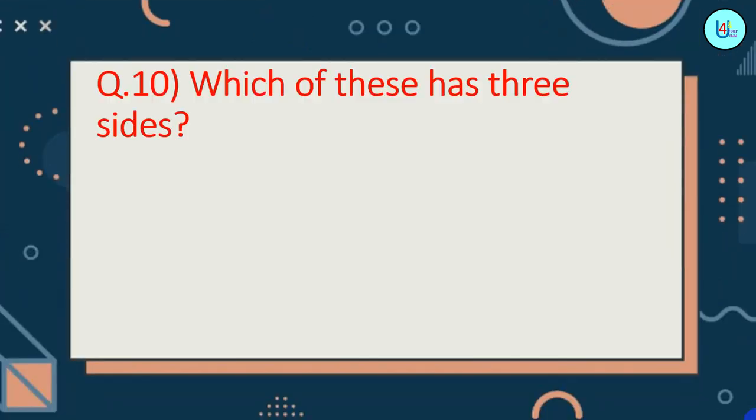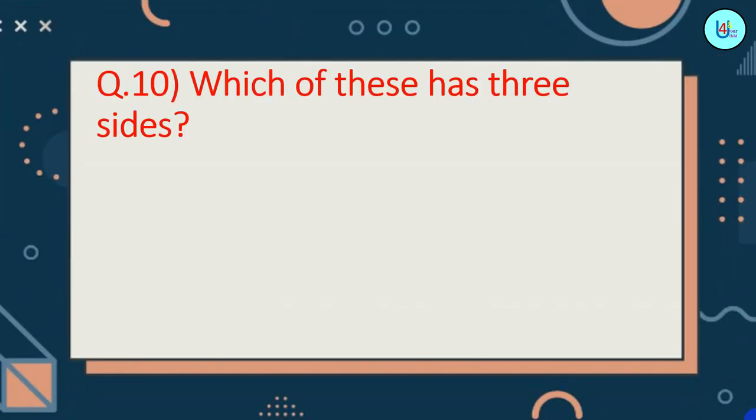Question number 10. Which of these has three sides? Diye gaye option mein se kaun sa shape aisa hai jiske teen sides hote hain? Circle, triangle, square.